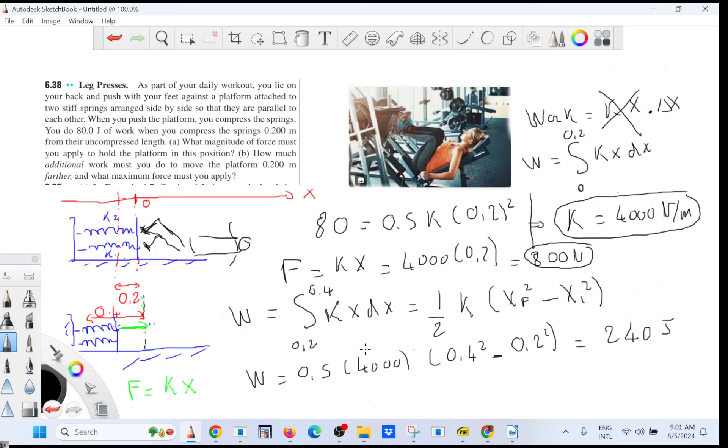Now the work, okay, so the maximum force, so the force will be, so here the restoring force is K times X, which is 0.4. So it's going to be 4,000 times 0.4, and you're going to find 1600 Newton. So you see it's more than the 800 Newton.